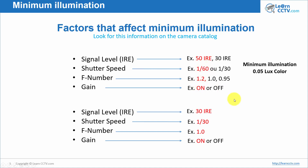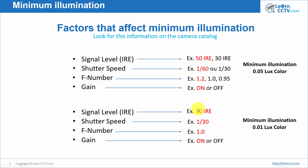Another manufacturer says their camera has a minimum illumination of 0.01 lux in color — so you might think that camera is much better because it needs less light. But be careful: if you only need 0.01 lux hitting the camera but the signal is measured at 30 IRE, the signal quality is not as good as the first camera. That's why it's misleading — the second camera is not actually better than the first.